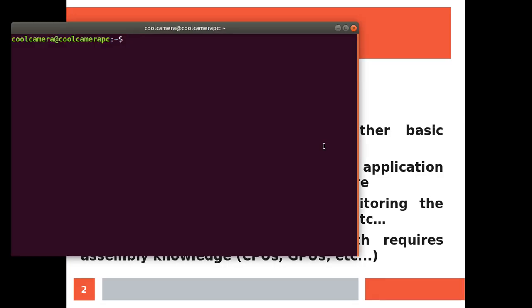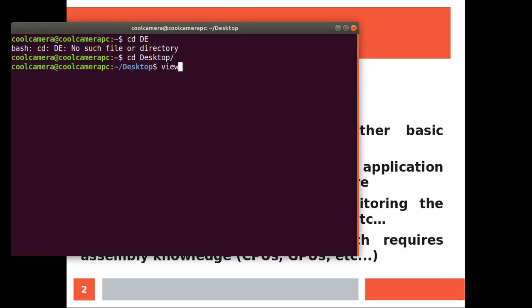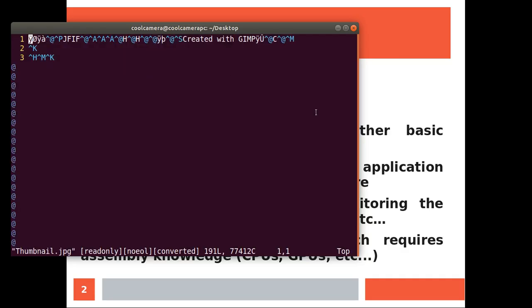So for example I here have an image and I'm going to use a simple text viewer which is going to give me much more information than I was expecting because it's telling me that this file was created using GIMP. Interesting.